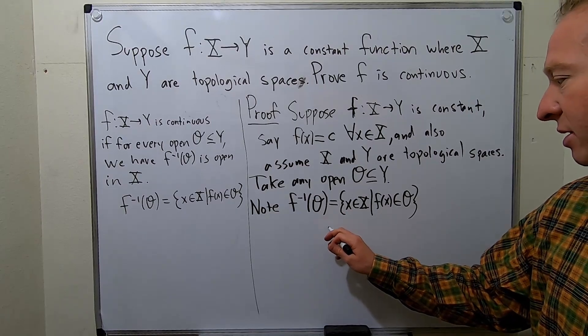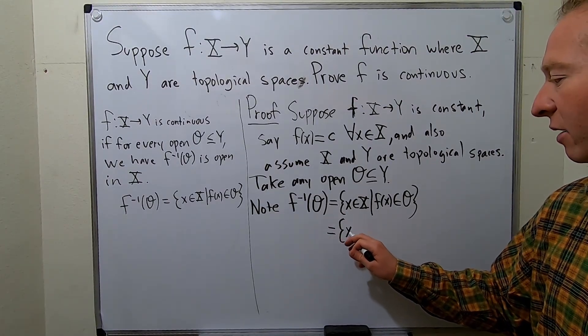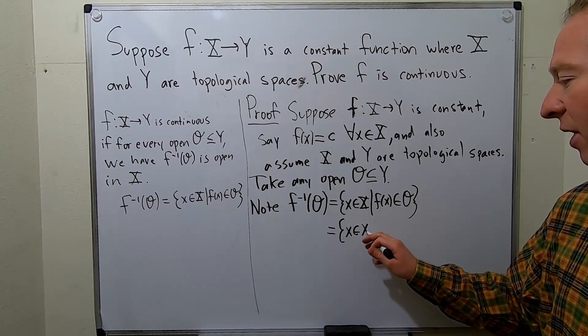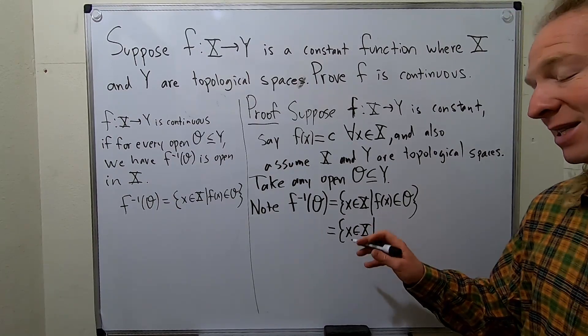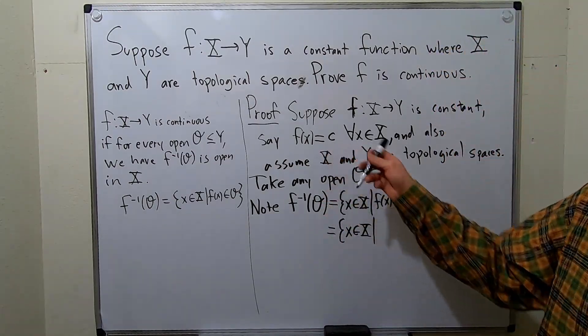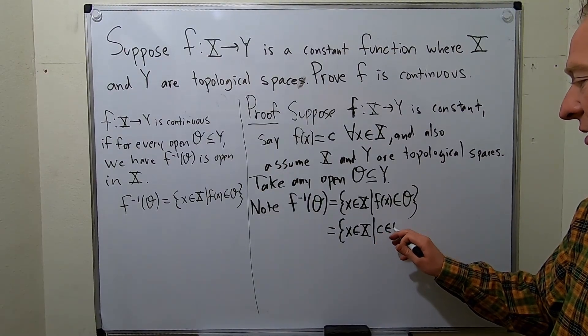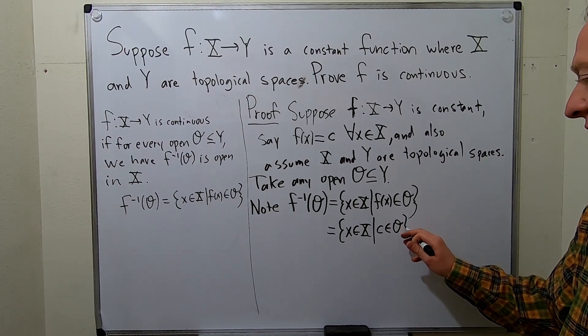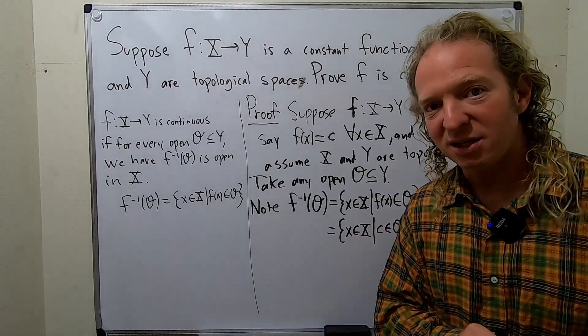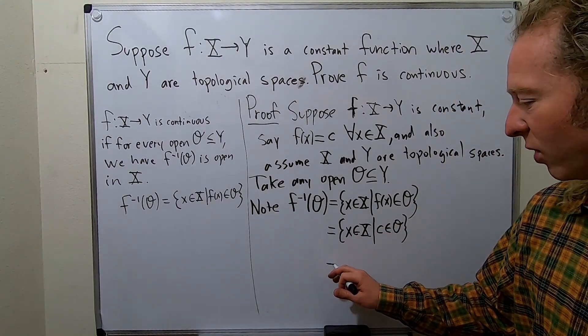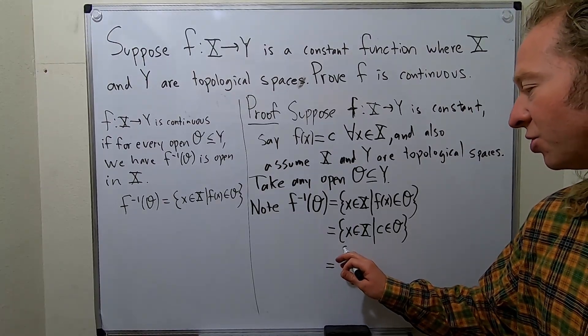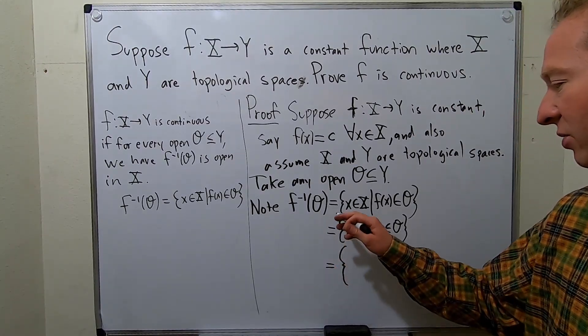So what is this? This is equal to the set of all x in capital X. So F of x is the constant function. So F of x is equal to C. So C is in O. So it's the set of all x's such that C is in O. But what is this? Well, it actually depends. So check this out. This is going to be a piecewise. You can write this in pieces.